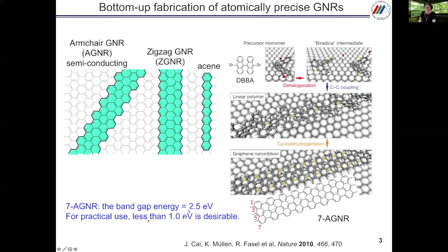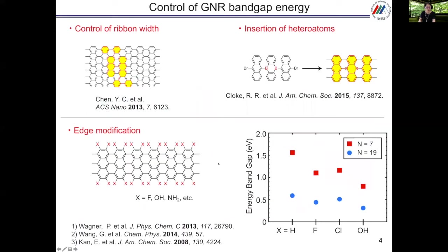7-AGNR has a bandgap energy of 2.5 eV. For practical use, less than 1.0 eV is desirable. For control of graphene nanoribbon bandgap energy, there are several methods: one is the control of ribbon widths, another is the insertion of heteroatoms, and the other is edge modification. Today, I will focus on the control of ribbon widths.